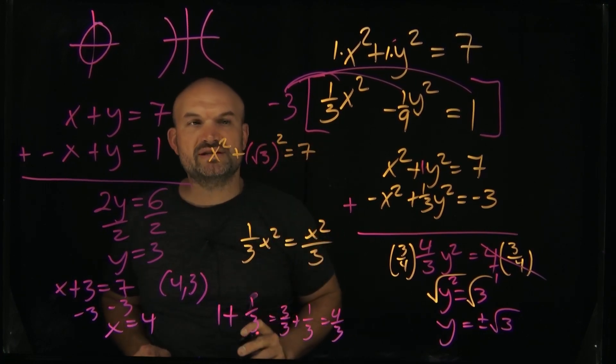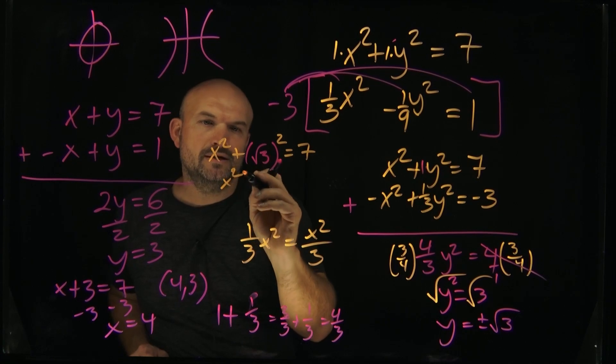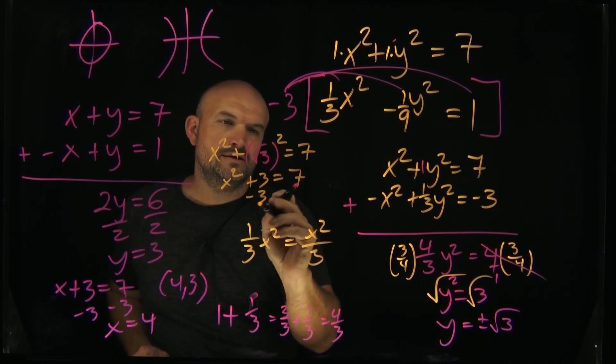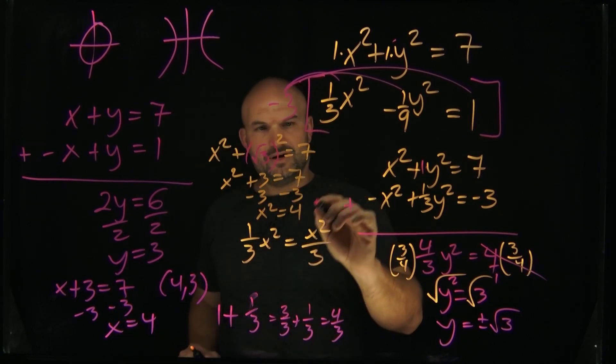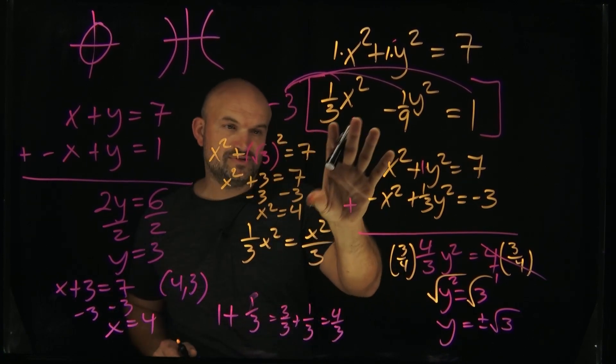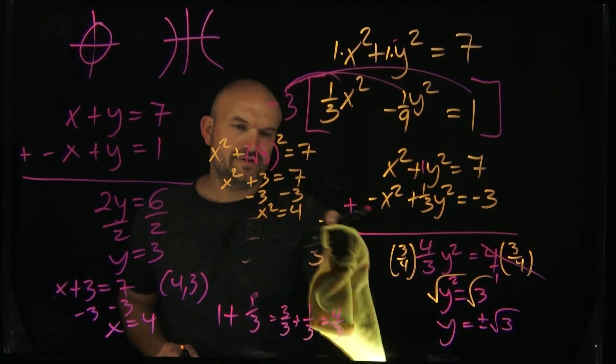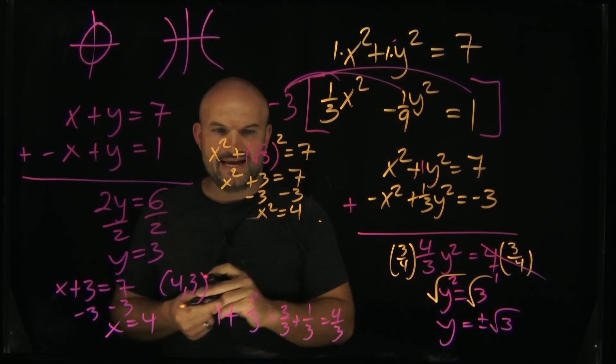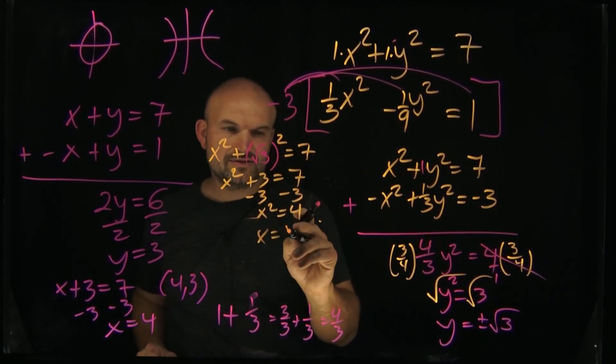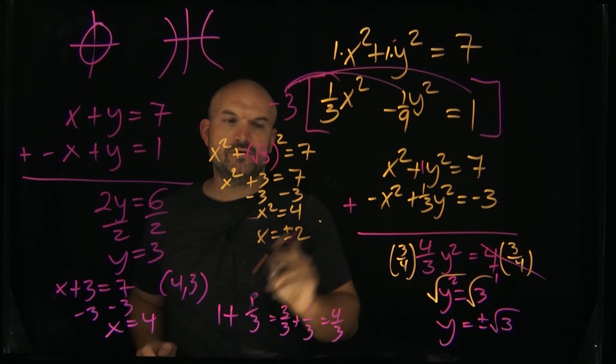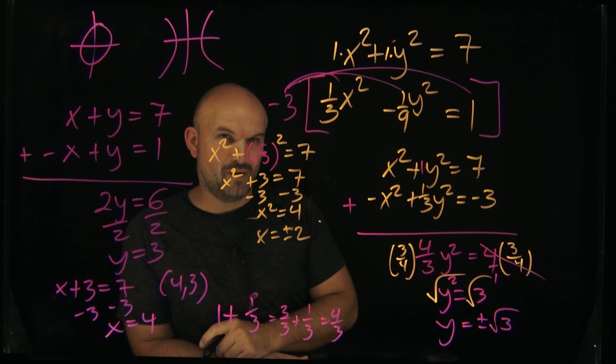So I'm going to plug into this equation because I don't want to deal with negatives. The square root of 3 squared or negative square root of 3 squared is just going to be equal to 3. x squared plus 3 equals 7. Subtract 3, subtract 3. x squared equals 4. And therefore, so now you can take the square root of both sides. x is going to equal plus or minus 2. We got to understand what's going on here. We have two values for x, and we have two values for y. When I had the positive square root of 3, that gave me two solutions. The negative square root of 3 gave me two solutions as well.